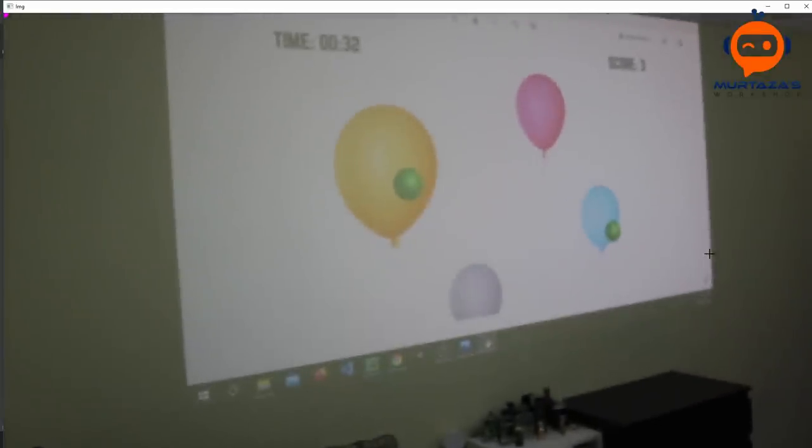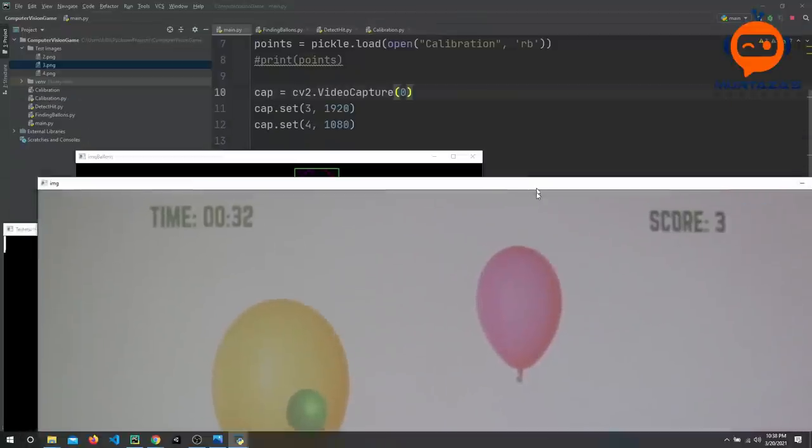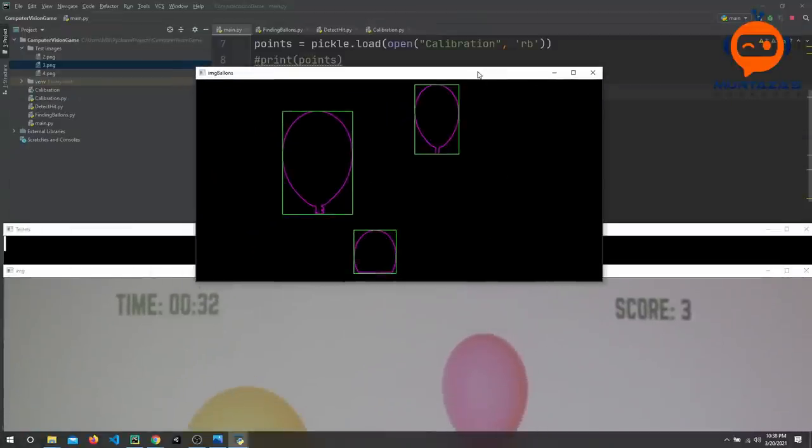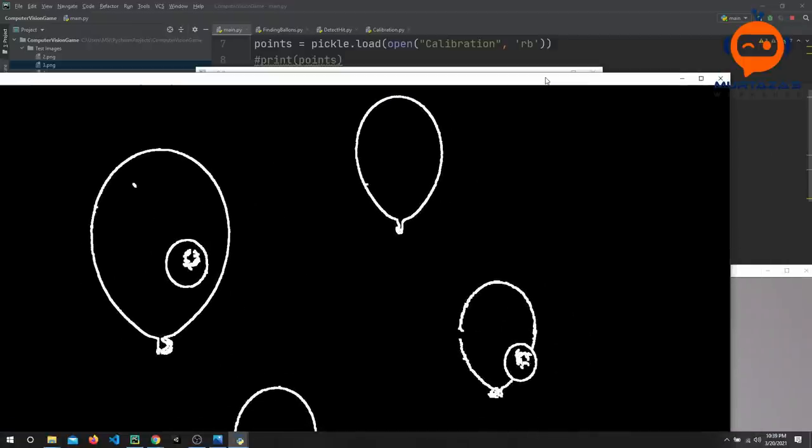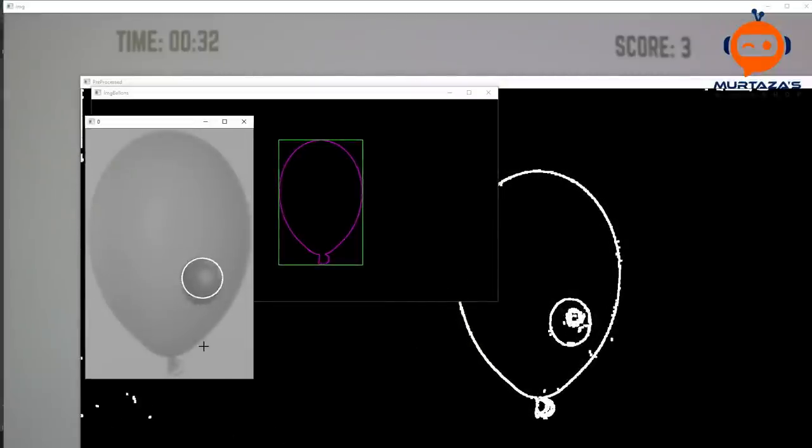So now I had to bring in the big guns. I brought in my DSLR camera that connected to my computer and I got finally a very good quality image. Using the testing image I could see that the balloons were being detected very accurately and the hit was being detected as well. So at this point I did not go for tuning, I just went ahead to the game part.